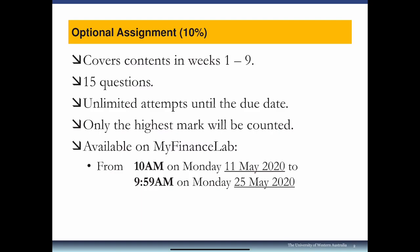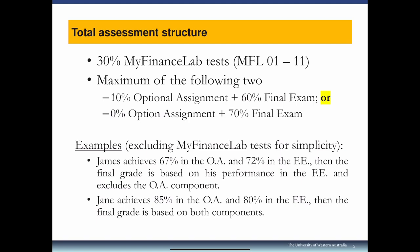The reason we call it optional is because you have a choice. The total assessment structure: 30% goes to MyFinanceLab tests — 11 tests, best 10 out of 11, roughly 3% each. For the remaining 70%, it's the maximum of either 10% optional assignment plus 60% final exam, or 0% optional assignment plus 70% final exam. If you score higher on the final exam, the 70% is based solely on that. If you score higher on the optional assignment — which is likely since you can get 100% — then 10% goes to the optional assignment and 60% to the final exam.